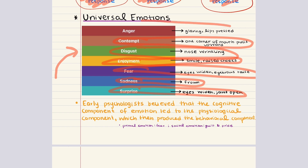Last but not least, anger — glaring, eyebrows pulled down and together, and lips pressed tightly together. While emotions are experienced universally, it is argued that they can be affected greatly by culture. Cultural dissimilarities in emotion include varying reactions to similar events, differences in the emotional experience itself, the behavior exhibited in response to an emotion, and the perception of that emotion by others within society.